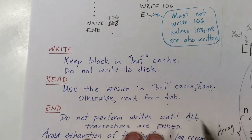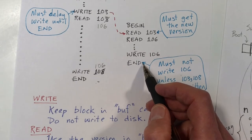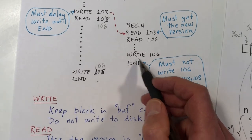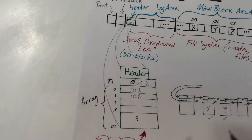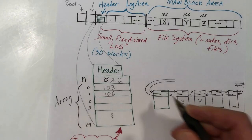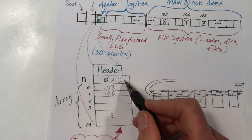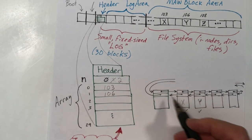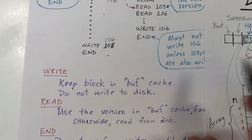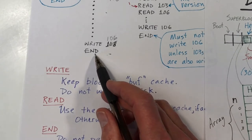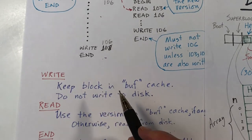Then we call end_op for the second transaction — but this is not the last transaction, so we don't do anything. The other thread continues and tries to write block 106 again. It searches the log and this time finds that 106 is already there, so n is not incremented and the buffer is already pinned — so it really doesn't do anything further. Finally, we come to the end_op for the last transaction, and at that point we find it's the last transaction and we're ready to commit.